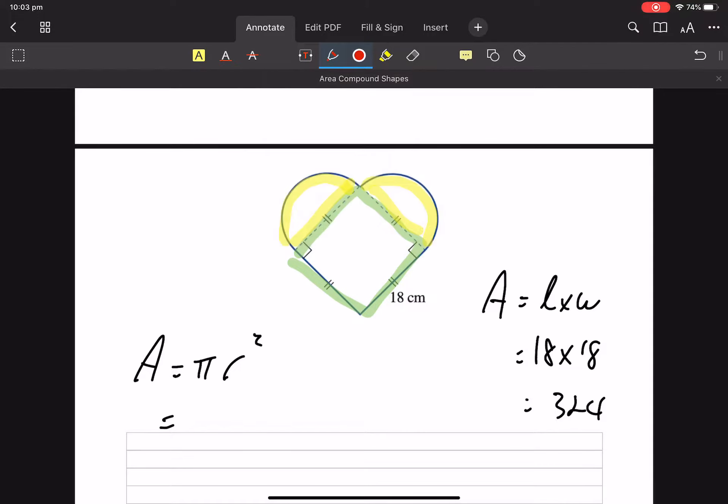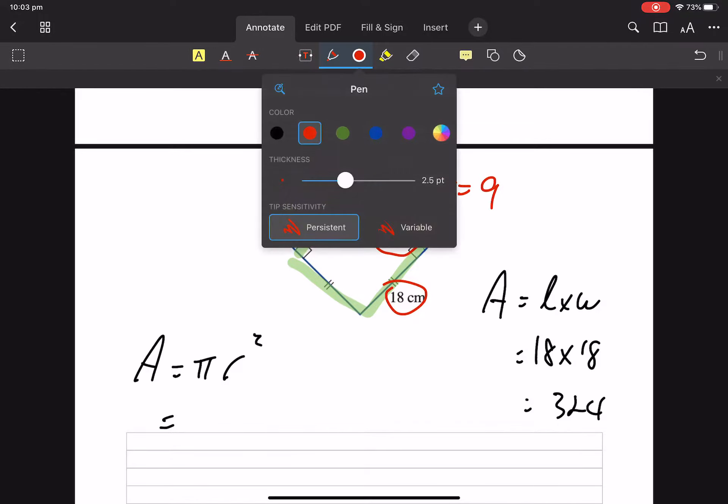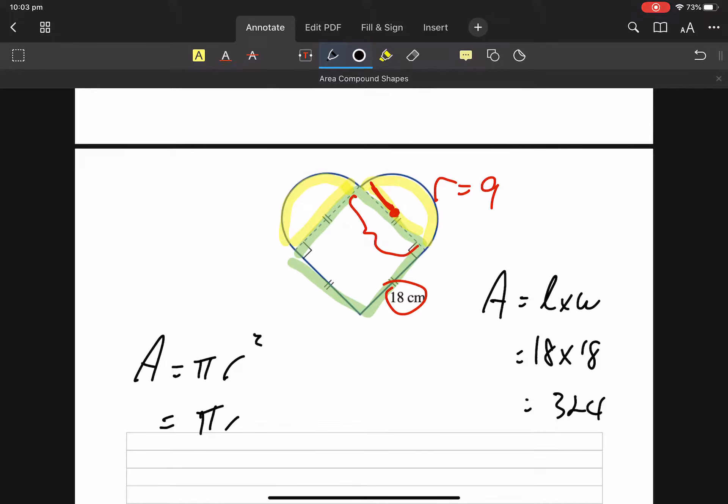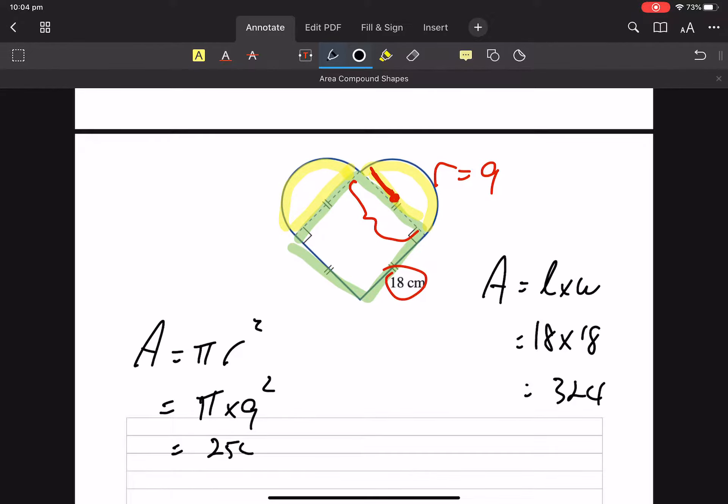Always got to take your time. Radius is from the centre to the outside. And we know that that is my 18. So here r is 9. So that's pi times 9 squared, 254.